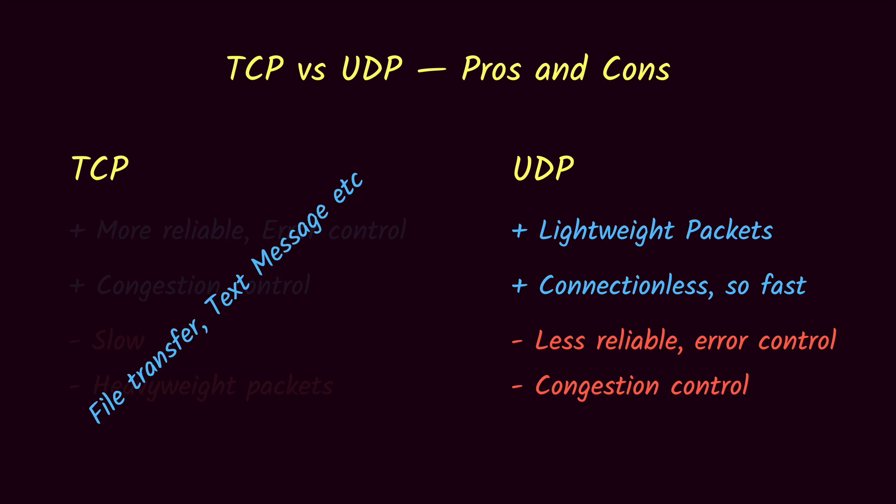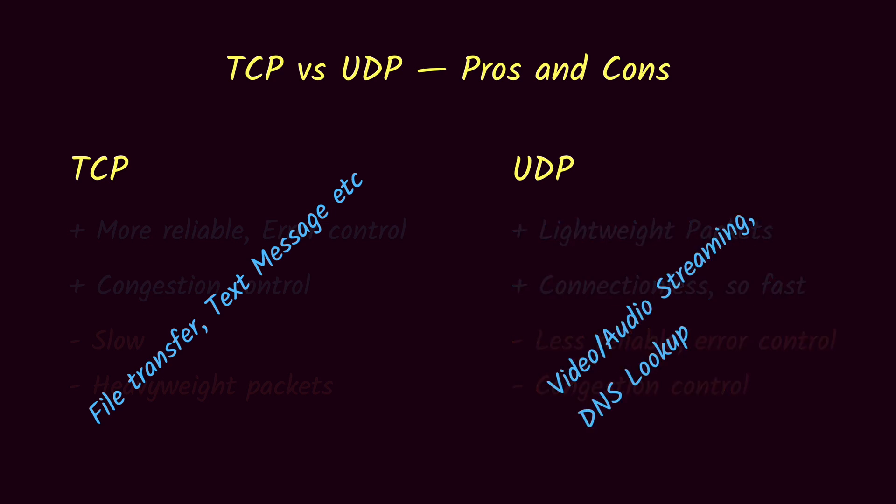UDP packets are much more lightweight with only an 8-byte header, and since no connection is needed before transmission, packet delivery is much faster than TCP. However, UDP is less reliable — lost packets are not retransmitted and there is no congestion control. UDP is used when speed is more important than reliability, for example video or audio streaming where some packet loss is acceptable, and video or audio calls.